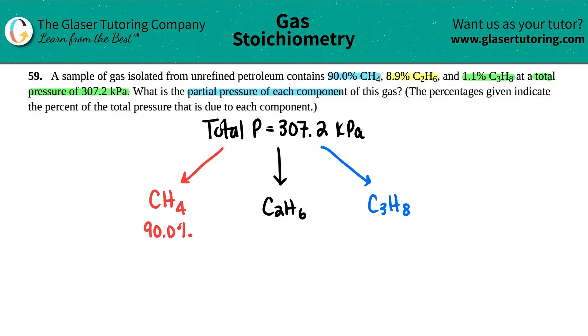They told us that 1.1% is made up of the ethane. Actually, nope, just kidding. Did you guys catch that? 8.9% was made up of the ethane, and then the 1.1% was the propane, the C3H8.